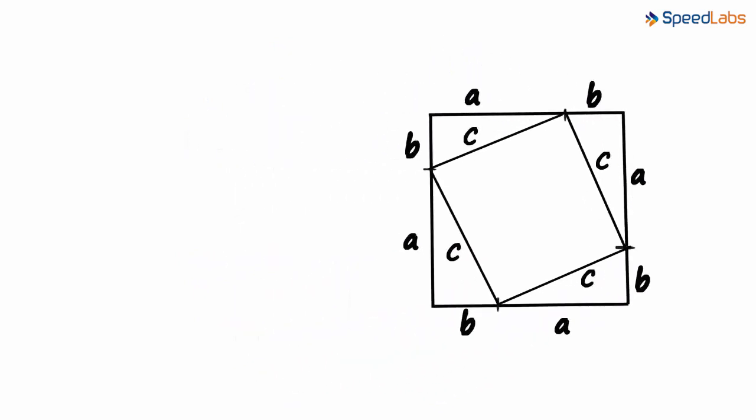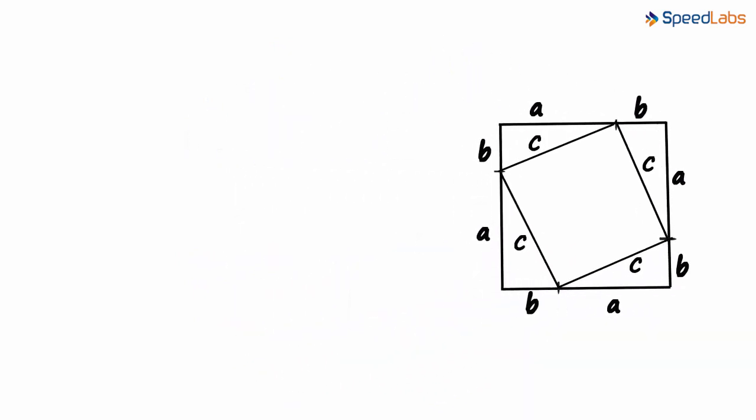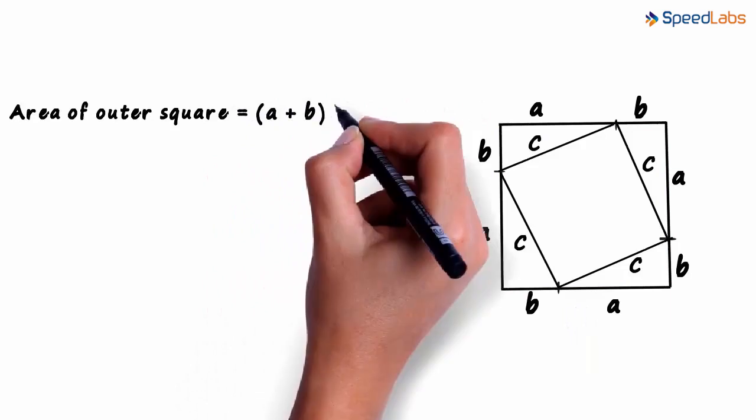Let's zoom out a bit and try to find the area of the outer square. The area of the square can be calculated in two ways. The first way is side multiplied by side. It can be written as a plus b multiplied by a plus b, which equals (a + b)².